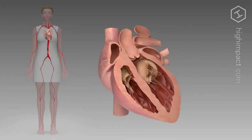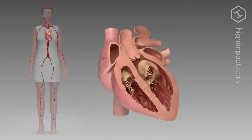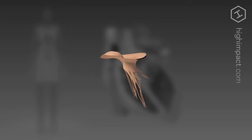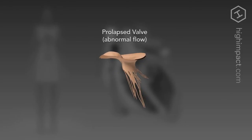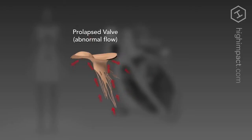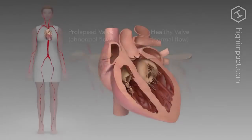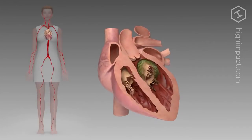What you are currently looking at is a healthy beating heart. What is now being shown to you is a prolapsed valve — it is prolapsed because of the vegetation on the left side. On the right is a healthy valve. As you can see, there is a difference between the abnormal blood flow and the healthy.